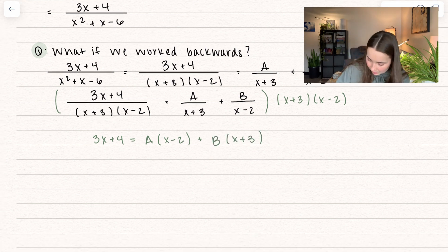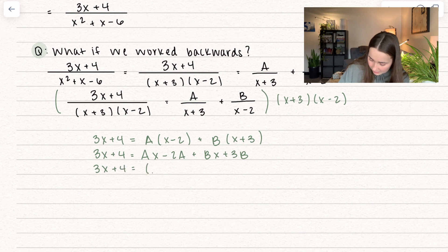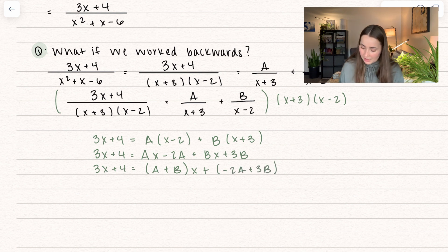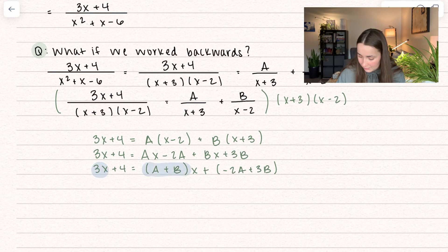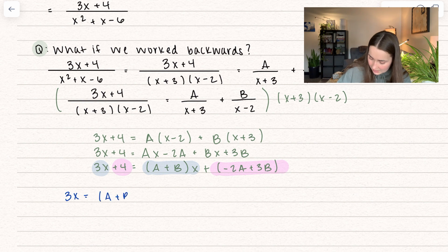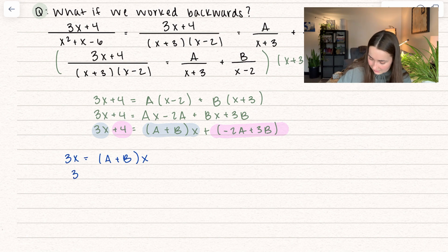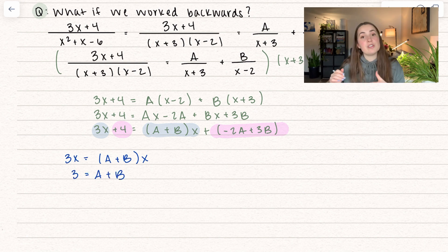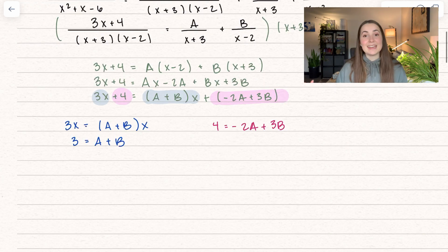So 3x plus 4 equals A times (x minus 2) plus B times (x plus 3). Distributing and combining like terms, we get (A plus B)x plus (negative 2A plus 3B). Since the two sides must be equal, the x-coefficients must match and the scalars must match. So A plus B equals 3, and negative 2A plus 3B equals 4.